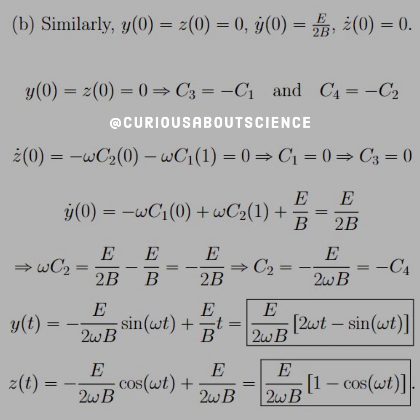So that makes life easy. But for the y velocity, we have to set that all equal to e over 2b. And then we see that that all simplifies down to c2 equal negative e over 2 omega b. And from the relationship we found with the position coordinates, we know that that's equal to negative c4.